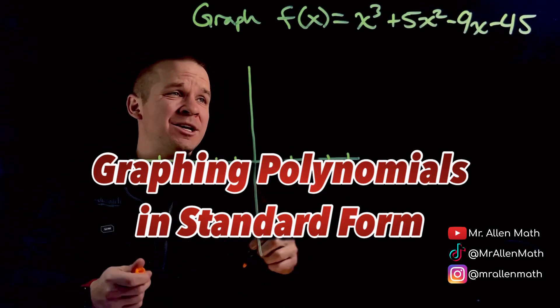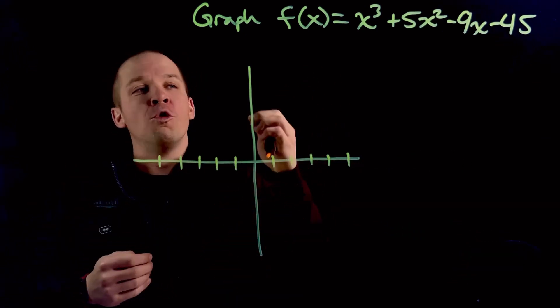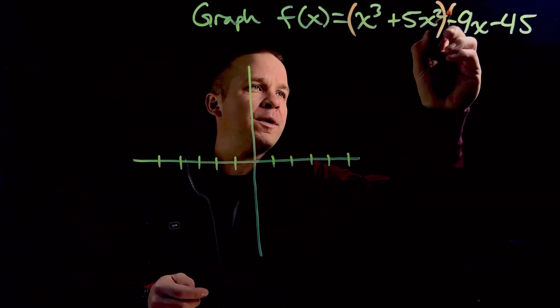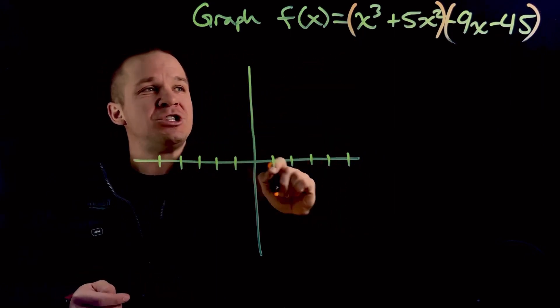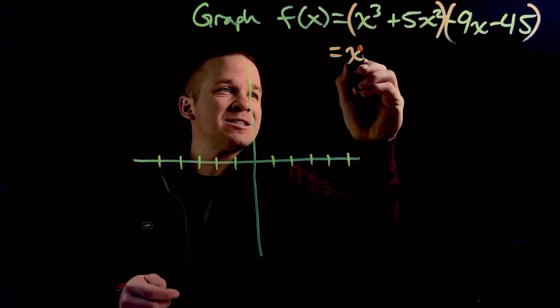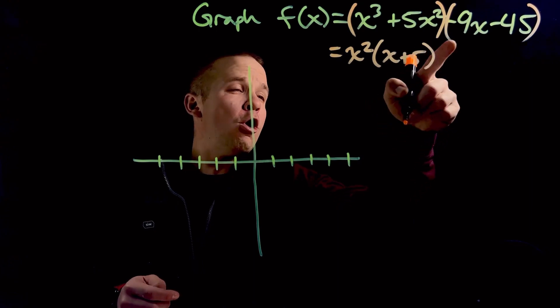We're going to use x-intercepts and y-intercepts to do so. And to get those x-intercepts, I'm going to have to factor this bad boy by grouping. We got four terms. I'm going to go with grouping here. So if I group them up and I get my GCF here, it's going to be x squared and leaves me with x plus 5.